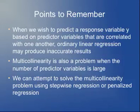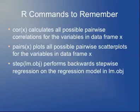I'll be covering lasso and ridge regression in much more detail on Wednesday. The key takeaways for today: if you want to predict Y based on correlated predictors, you can get inaccurate results with ordinary linear regression. For a reasonably large number of predictors — more than about four or five — collinearity will be an issue, and you can try to address it using stepwise regression or penalized regression, though I personally strongly favor the penalized approach. New R commands today: cor, pairs, and step. Any questions?